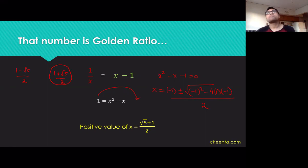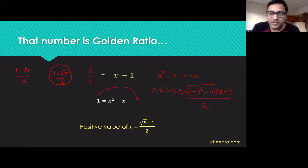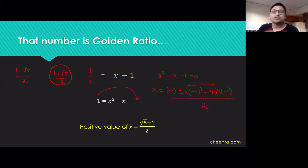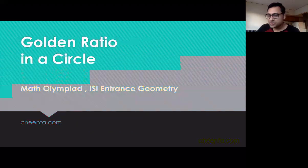You take the positive value because we are searching for a positive number. Now, why is the positive number known as the golden ratio? There is a very beautiful video by 3Blue1Brown — you can watch it on the internet. But we will not discuss that today because we want to quickly go over to our problem, which is the golden ratio in a circle.